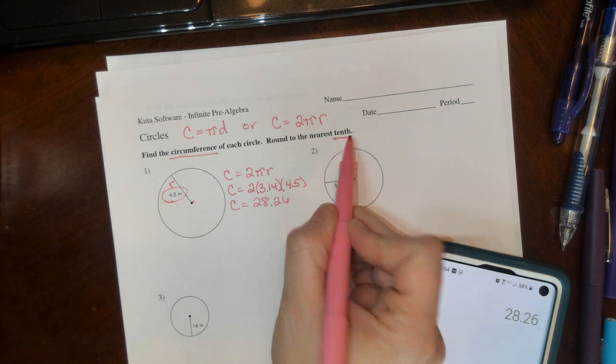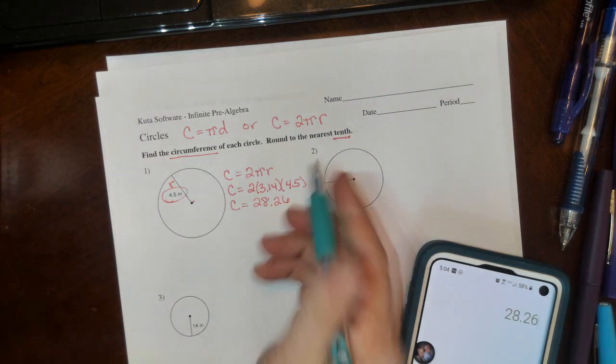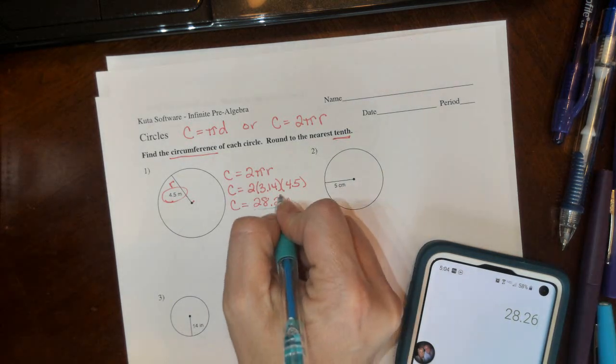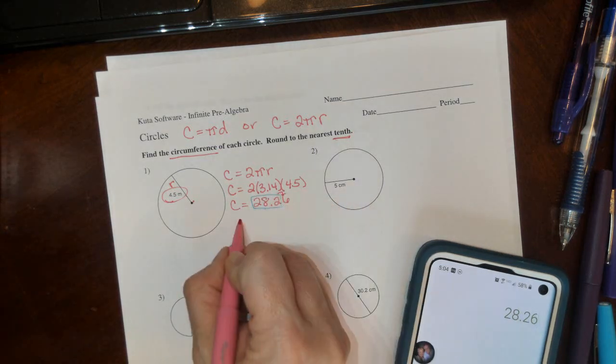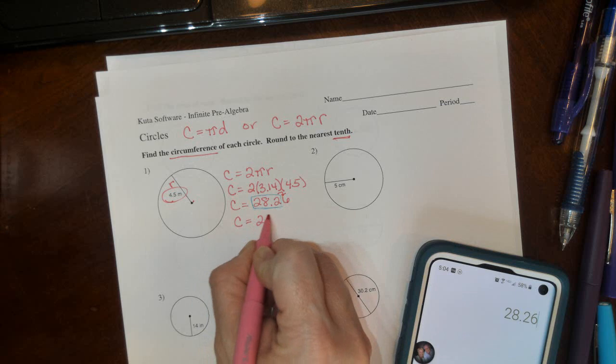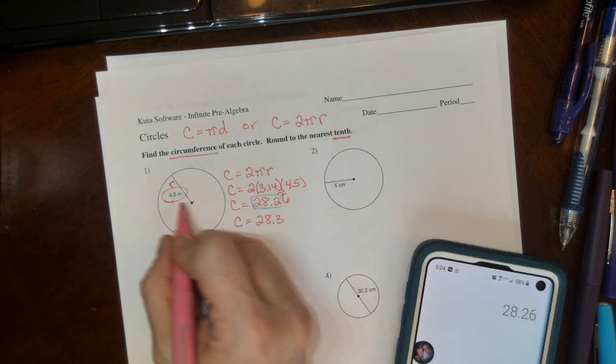Round to the nearest tenth. This is the tenths place value, so our circumference is 28.3 meters.